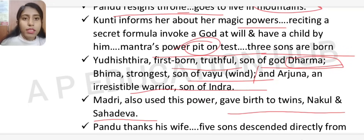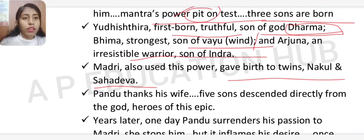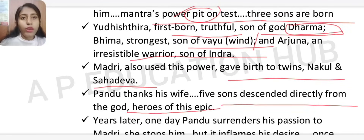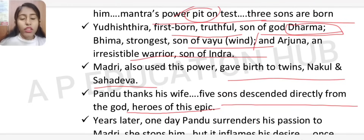In this way Pandu had five sons: Yudhishthira, Bhim, Arjun, Nakul, and Sahadev. Pandu thanked his wives because now he had five sons descended directly from the gods — the heroes of this epic.